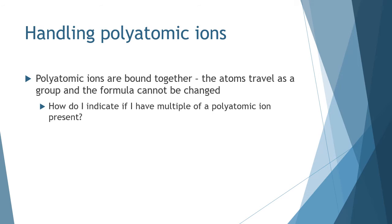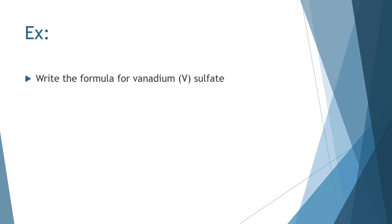So, how do I indicate that I have multiple of a polyatomic ion present in a formula? How do I put a subscript next to a subscript, basically? Let's look at an example in order to determine this.